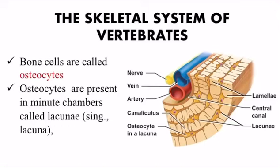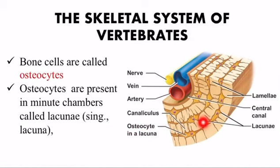Bone cells are called osteocytes, and osteocytes are present in minute chambers called lacunae. In this diagram you can see the osteocyte present in a lacuna, and here are the lacunae in which the osteocytes are present.